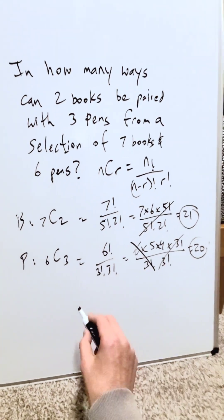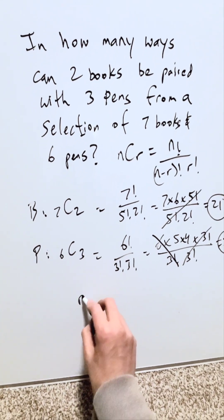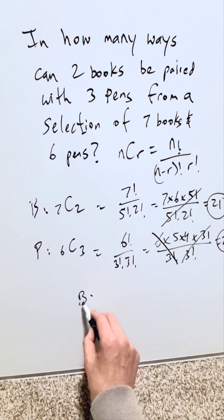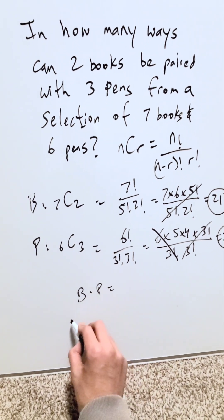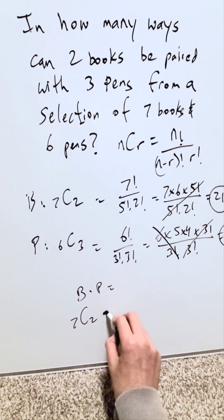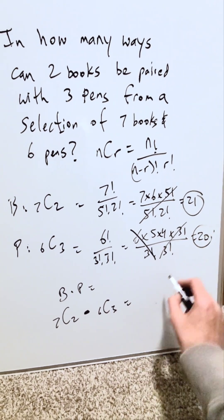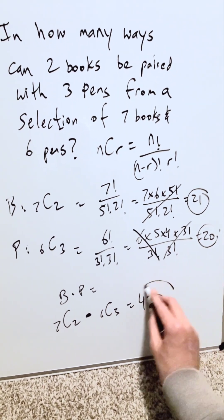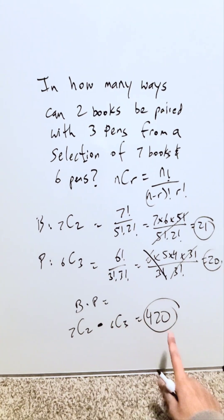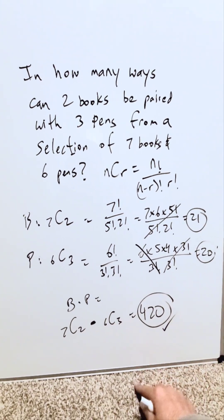But in its entirety, I have here my number of combinations with regards to books times pens. I would have done here 7C2 times 6C3, and I'll do 21 times 20. The end result would be 420 different ways to fulfill the requirements mentioned here.